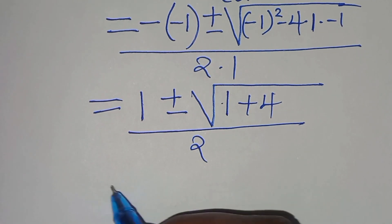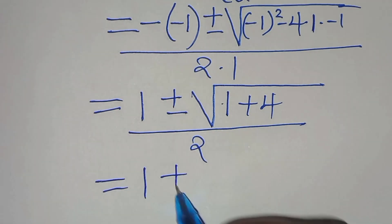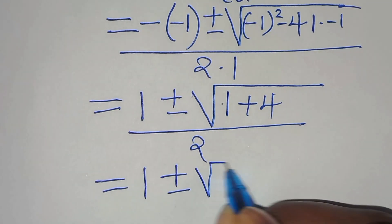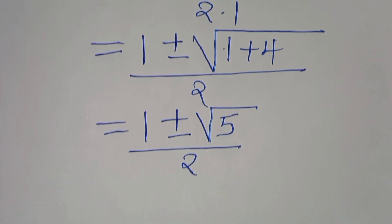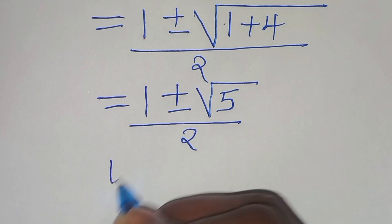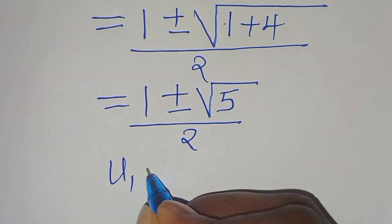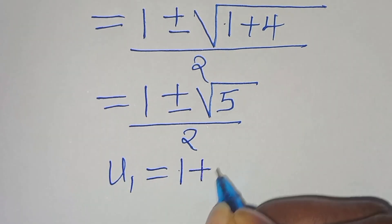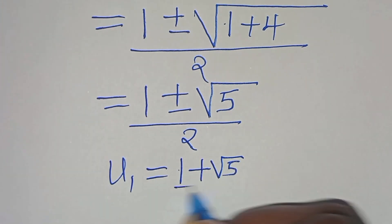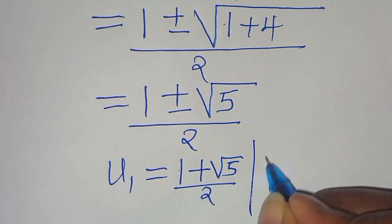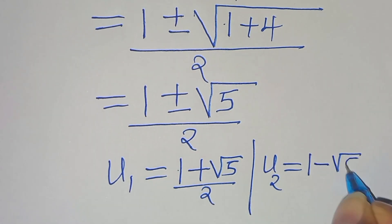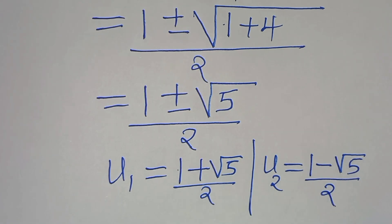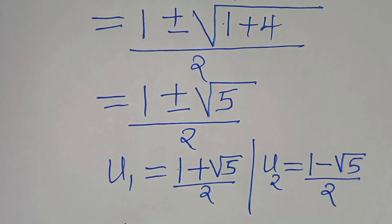This simplifies to 1 plus or minus the square root of 1 plus 4, which is 5, all divided by 2. So u₁ equals (1 plus the square root of 5) divided by 2, and u₂ equals (1 minus the square root of 5) divided by 2.